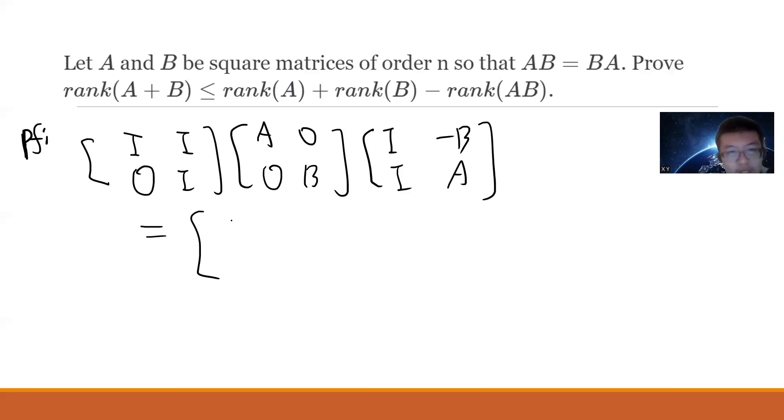right, so you get like A and AB, and a zero and B, and identity B, identity A, then you get A plus B, A minus A, B plus B,